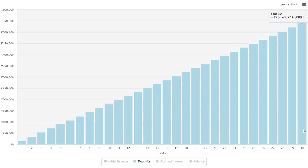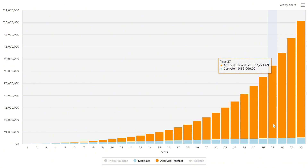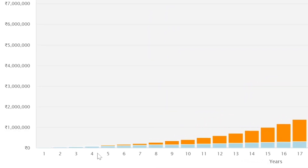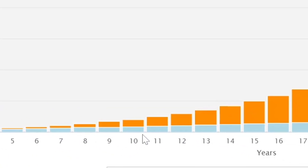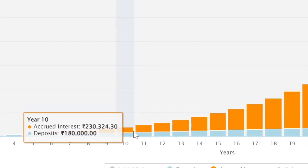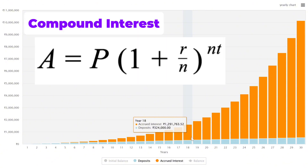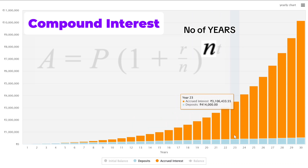Looking at the graph, we can see clearly: the blue color is the interest gaining, and the orange color is the amount we invest. In the initial stage — Year 1, Year 2, Year 3, up to Year 5 — the interest is very little. At Year 10, the deposit and interest are almost equal. But after that, we are getting more and more interest. This is because of the compound interest formula — 'n' is the number of years, and it is in a power value. As n increases, it gives a drastic output.